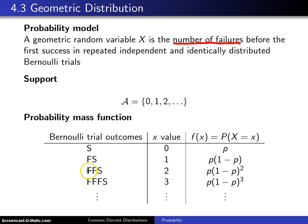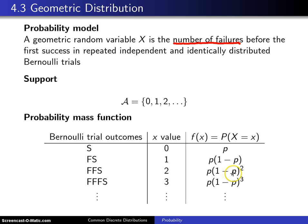The next case is failure, failure, success. In this case, the number of failures before the first success is 2. That occurs with probability 1 minus p for the first failure, times 1 minus p again for the second failure, times p for the success. And the pattern continues.